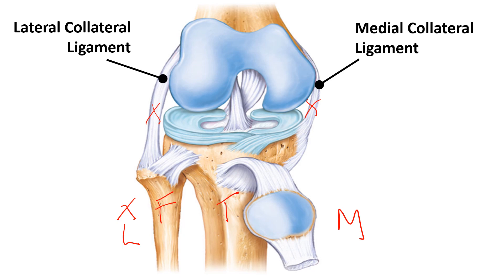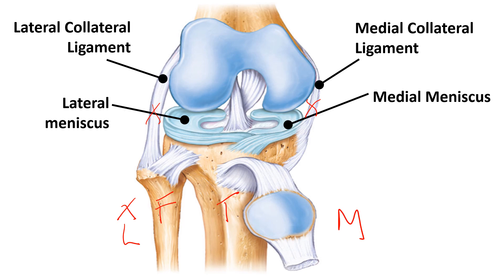The menisci are also named medial and lateral. Menisci are like intervertebral discs in the spine — they're like little cushions. The lateral meniscus is on the same side as the fibula, and the medial meniscus is on the tibia side. There are two menisci; you just have to know which is medial and which is lateral. And that's it — I say that like it's not a lot.